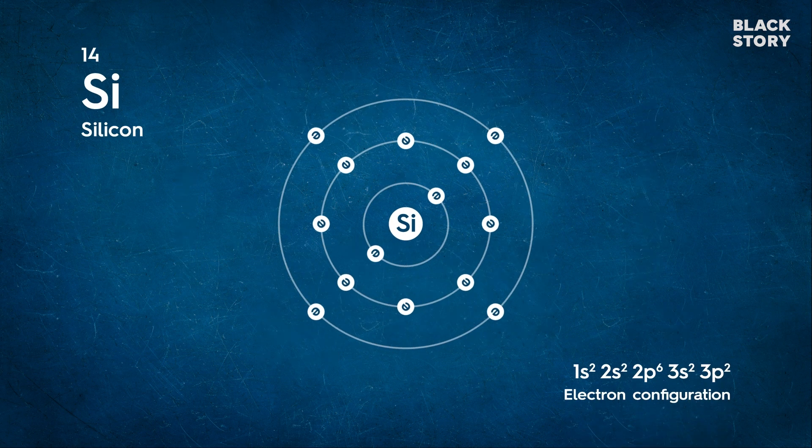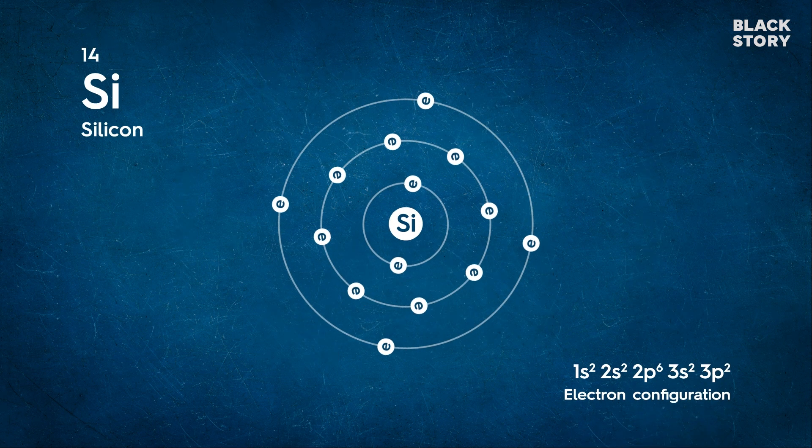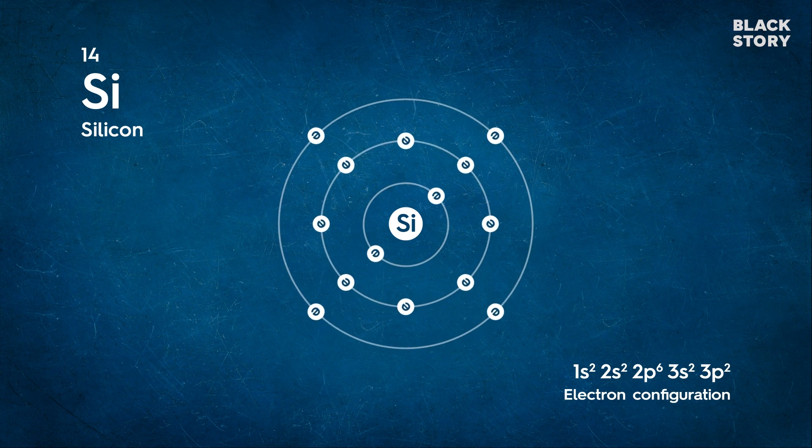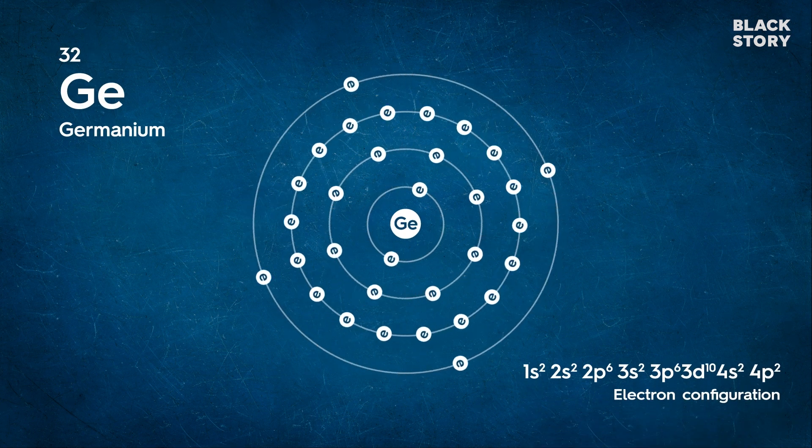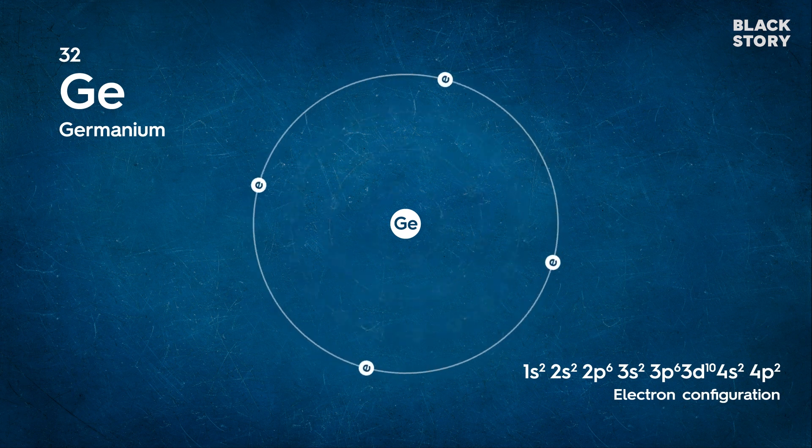Let's discuss the two important semiconducting materials, silicon and germanium. Silicon has a total of 14 electrons, out of which 4 electrons are in the outermost orbit. Similarly, germanium has a total of 32 electrons with 4 electrons in its outermost orbit.